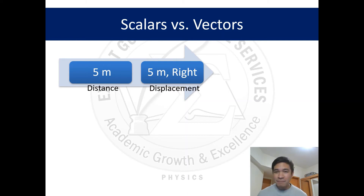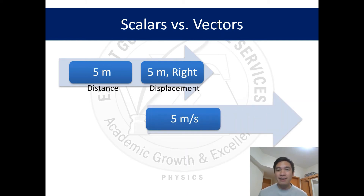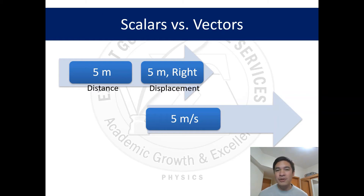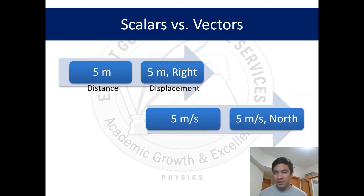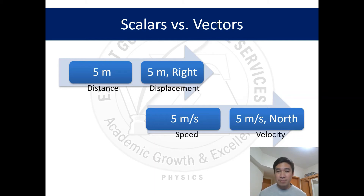Another example: '5 meters per second' contains only magnitude, so it's a scalar. But when you add direction — '5 meters per second north' — it now becomes a vector. As a scalar it's called speed, but as a vector it's better called velocity.